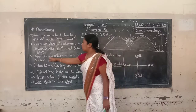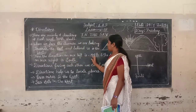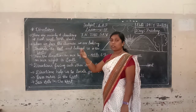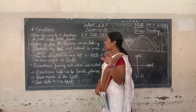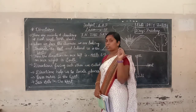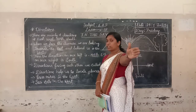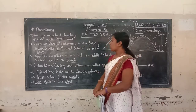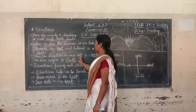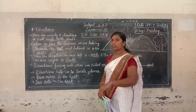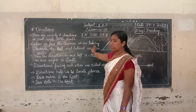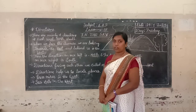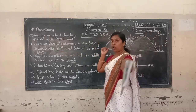When you stand facing the sunrise, the direction on your left is north. So the direction on our left is north, and the direction on our right is south. So: east is in front, west is behind, north is on the left hand, and south is on the right hand.